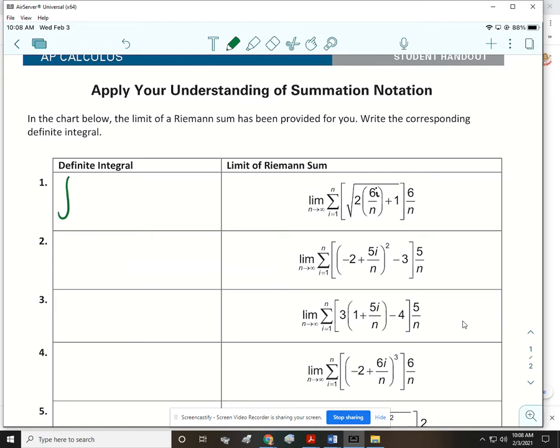Okay, so our definite integral is going to have our integral notation. Because nothing is added or subtracted to this 6i over n, I know that my lower limit is 0. And then my delta x is 6 over n, so that would mean that my upper limit would be 6. So when I subtract those, I get 6. Great, and then what I'm going to do is I'm going to go back, and in the place of this 6i over n, I'm going to put an x. So it would be the square root of 2x plus 1. And then at the end, we always have a dx.